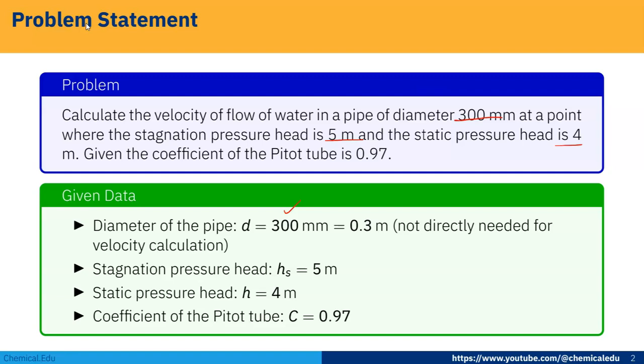Diameter of the pipe d is 300 mm, or 0.3 meters, not directly needed for velocity calculation. Stagnation pressure head h_s equals 5 meters, static pressure head h equals 4 meters, and coefficient of Pitot tube C equals 0.97.